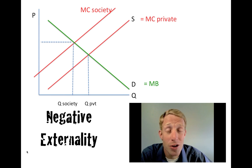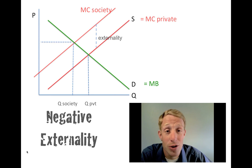The negative externality is found by the distance at any output between the two supply curves. That's the amount of the externality, or the dollar value of the externality.